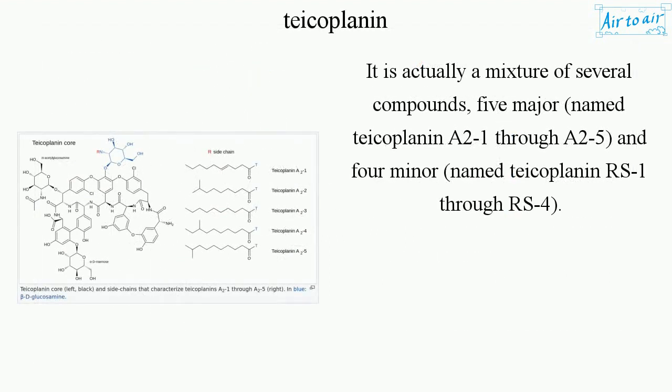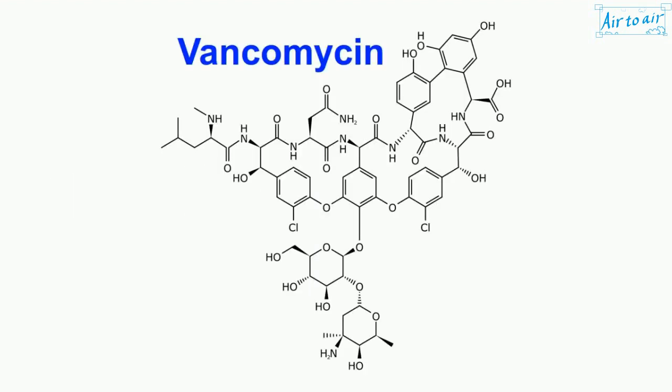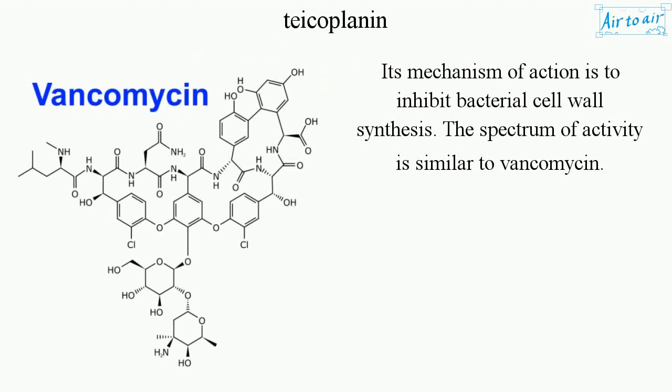It is actually a mixture of several compounds: 5 major, named Teicoplanin A2-1 through A2-5, and 4 minor, named Teicoplanin-1-Rs4. Its mechanism of action is to inhibit bacterial cell wall synthesis. The spectrum of activity is similar to vancomycin.